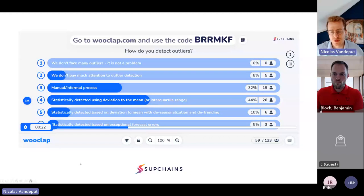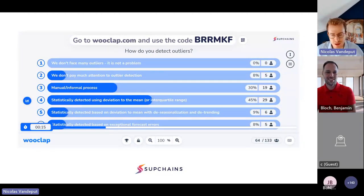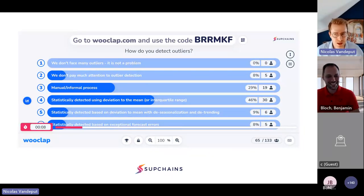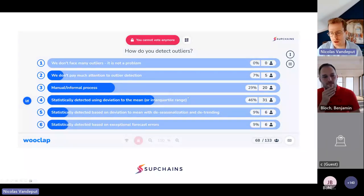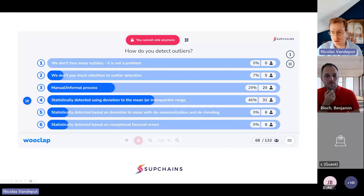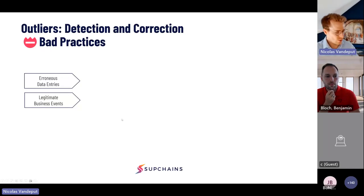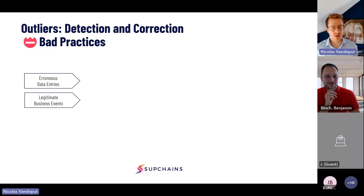I guess I have some sort of survival bias, because none of you said 'we don't face outlier problems' — well, that's the subject of this webinar. Most of you selected something like detecting outliers based on deviation to the mean, or what some software calls interquartile range — that's the name in SAP IBP. That's the most common technique by far. The other approach would be simply doing it manually.